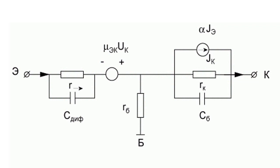Here is an equivalent circuit of a bipolar transistor at a common base connection. The main passive components are resistances and capacitances of the collector and emitter junctions. The active components are the current generator in the collector circuit and an EMF source in the emitter circuit, which reflects the feedback between the emitter and the collector.